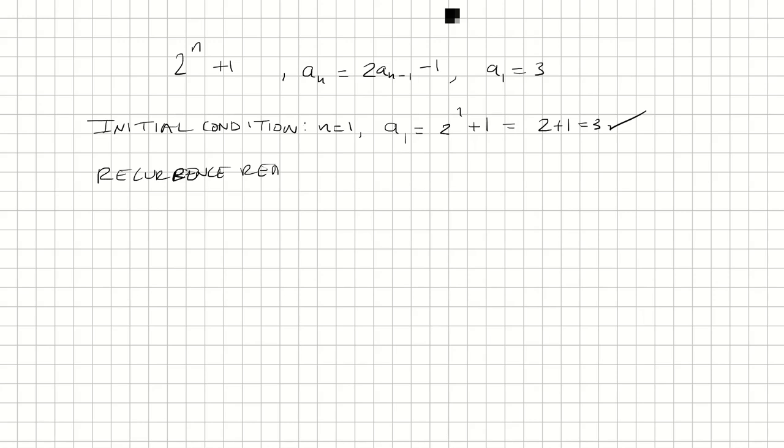For this one, we're going to start with the formula a sub n equals 2 times a sub n minus 1 minus 1. Now this is a sub n. This is another way to write it without the recursive relation. So a sub n is 2 to the n plus 1.